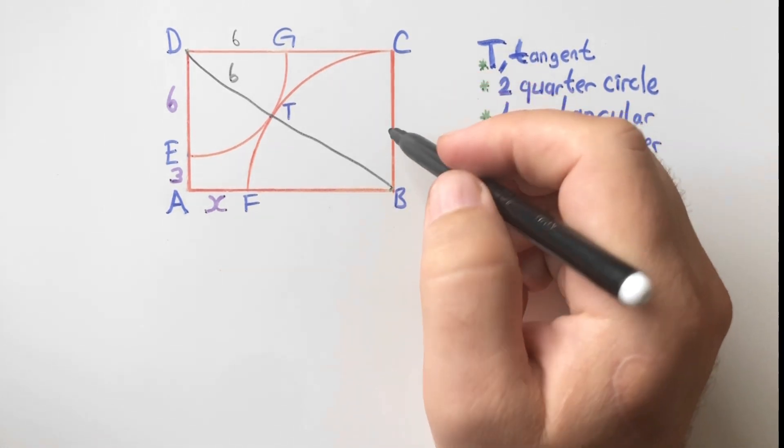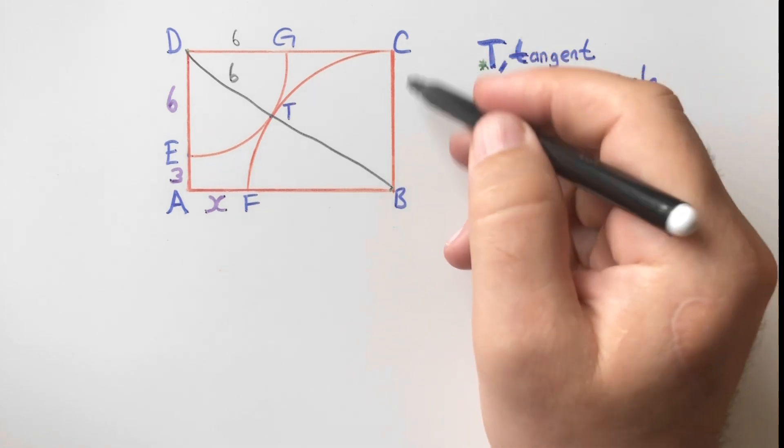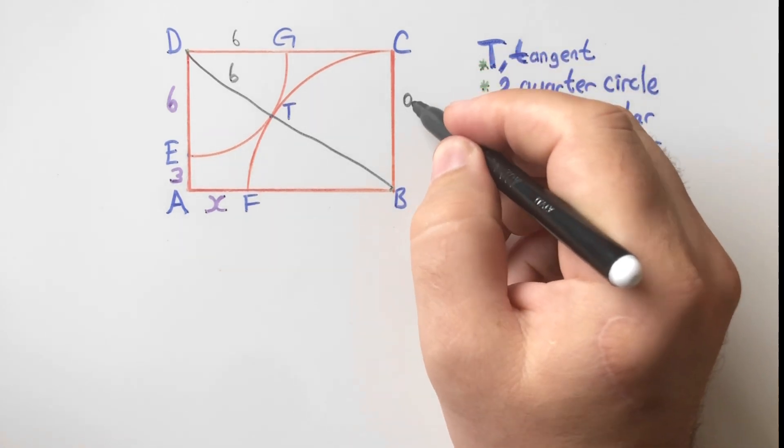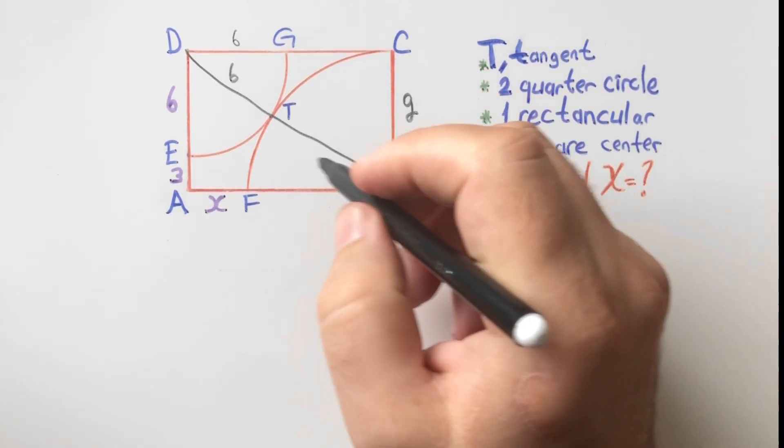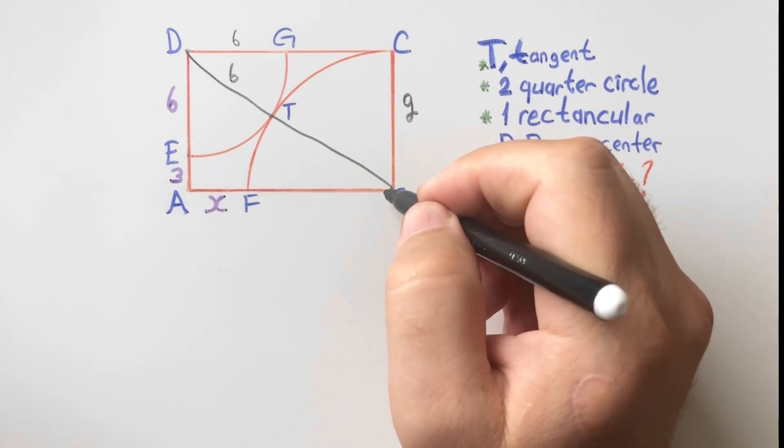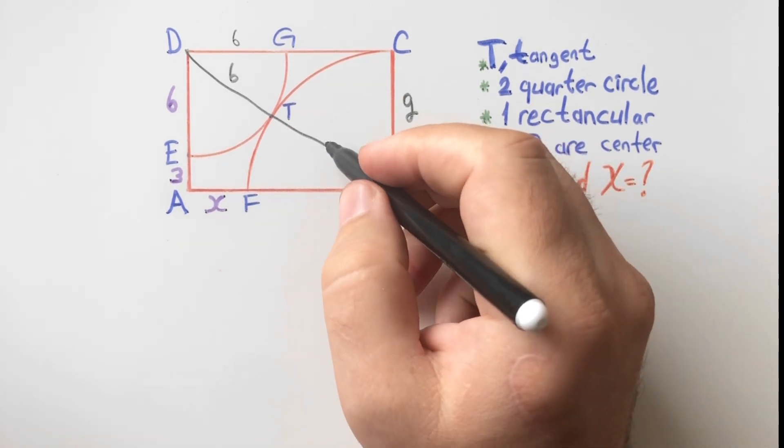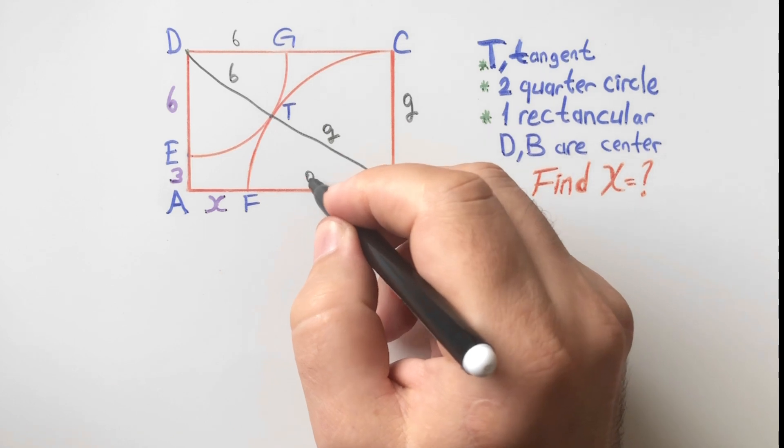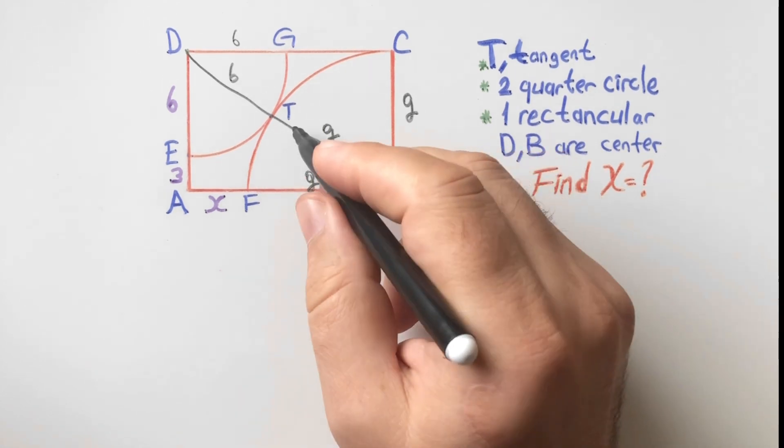This length is equal to this side, so here is nine units and these two lengths are radius as well. So these two lengths are equal to nine.